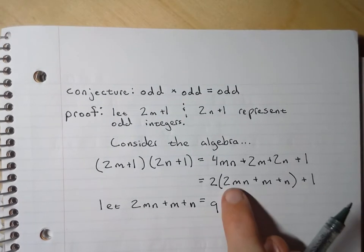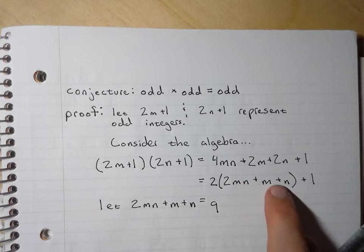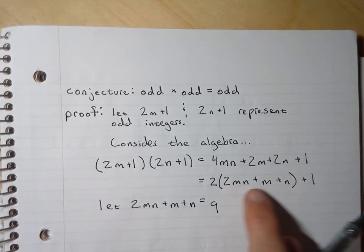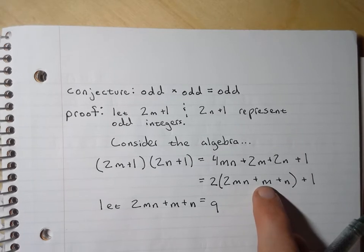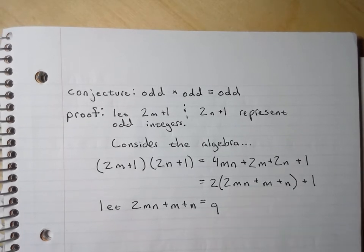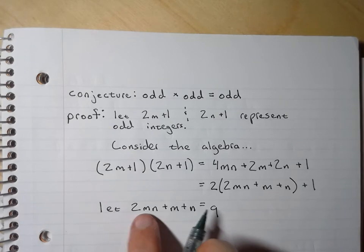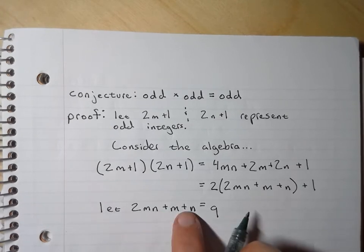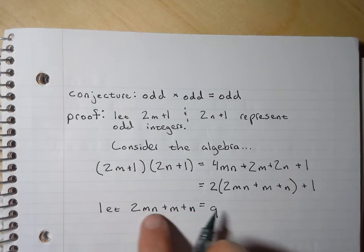Seeing that all of this right here represents a single integer under closure, regardless of what the values of m and n are, is why I keep saying in class you need to be an algebra wizard. Because of closure of the integers under multiplication and addition, this is always going to equal an integer.